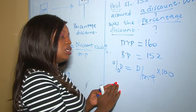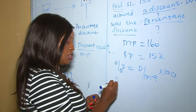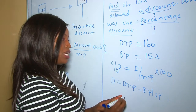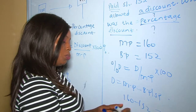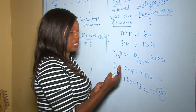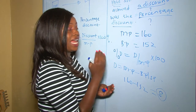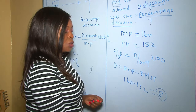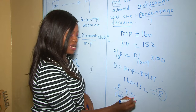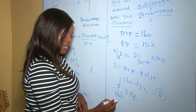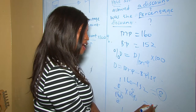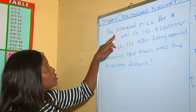Percentage discount = (discount ÷ marked price) × 100. We must first find the discount: discount = marked price − buying price = 160 − 152 = 8 shillings. So Monene was allowed a discount of 8 shillings. Now the percentage discount = (8 ÷ 160) × 100. Cancelling zeros: 8 ÷ 16 × 10 = 5. Therefore Monene was given a 5% discount.